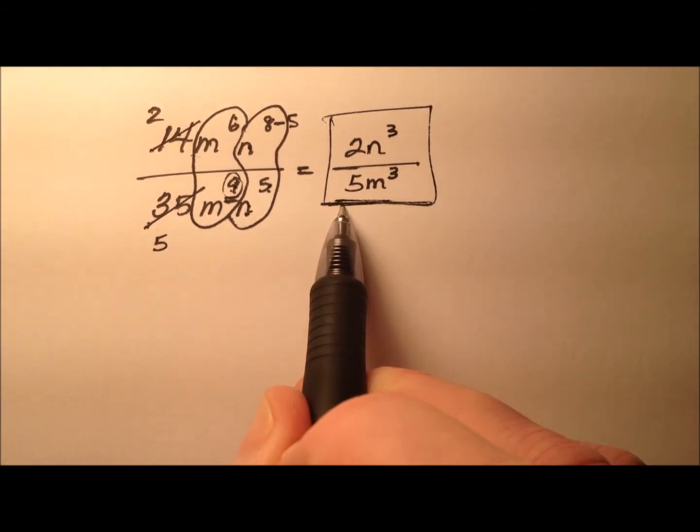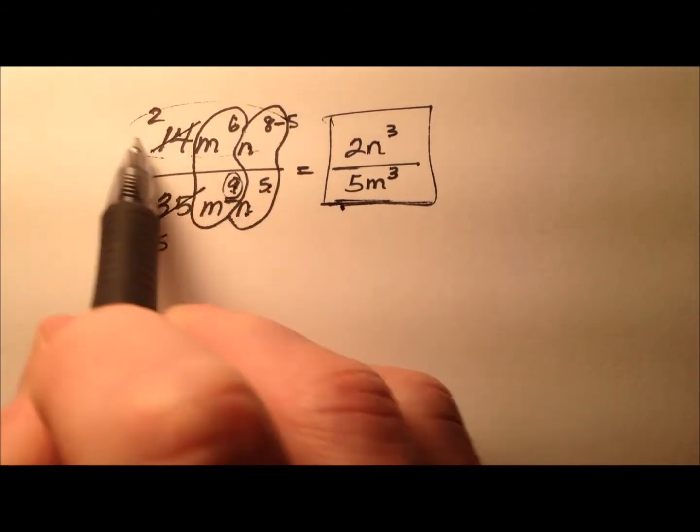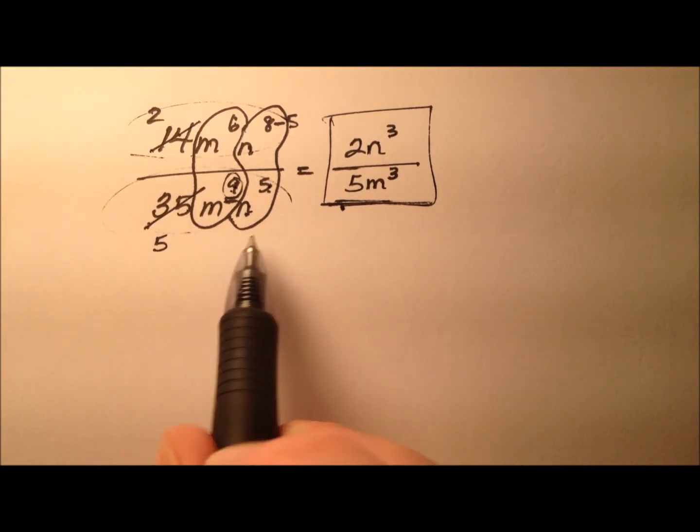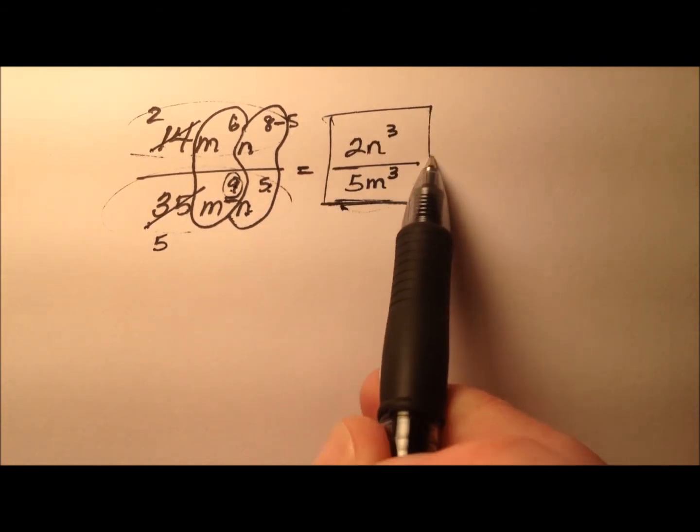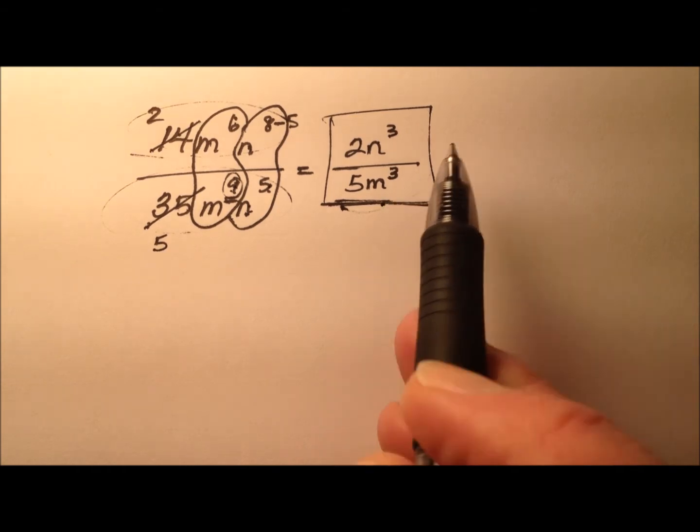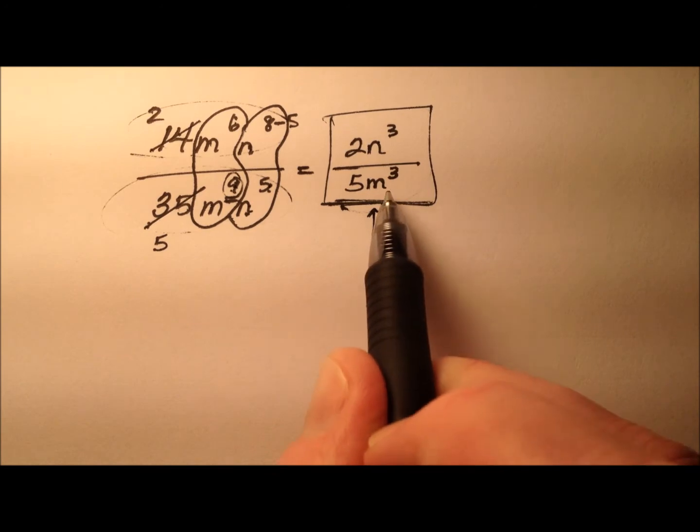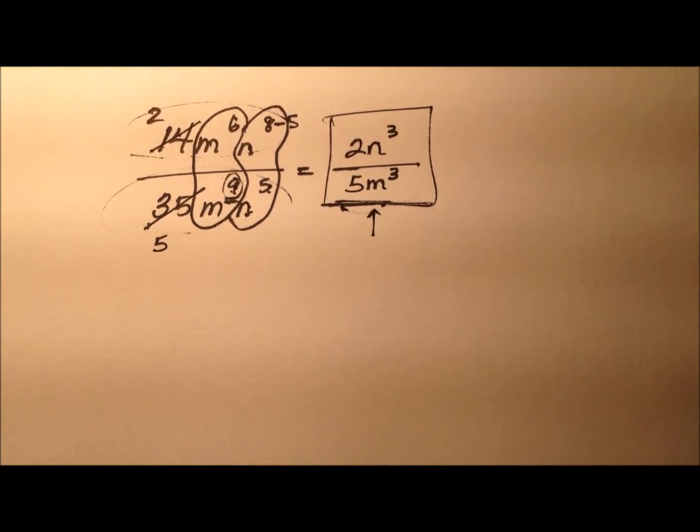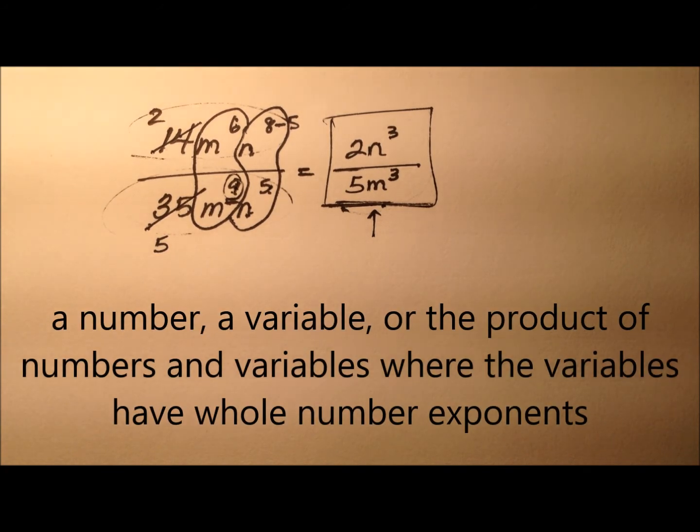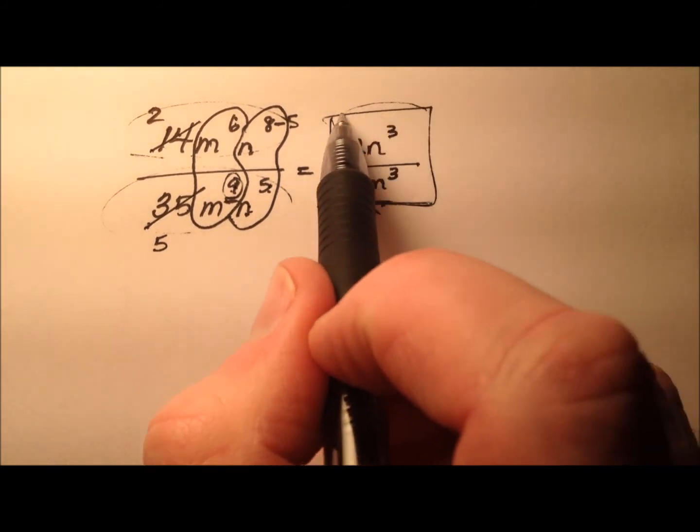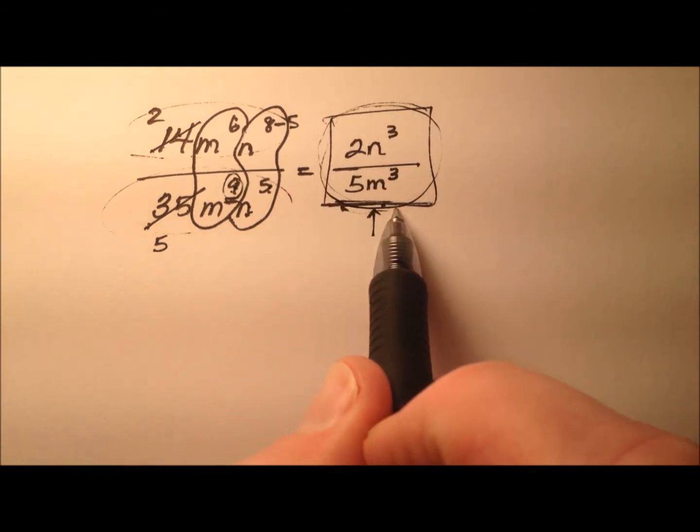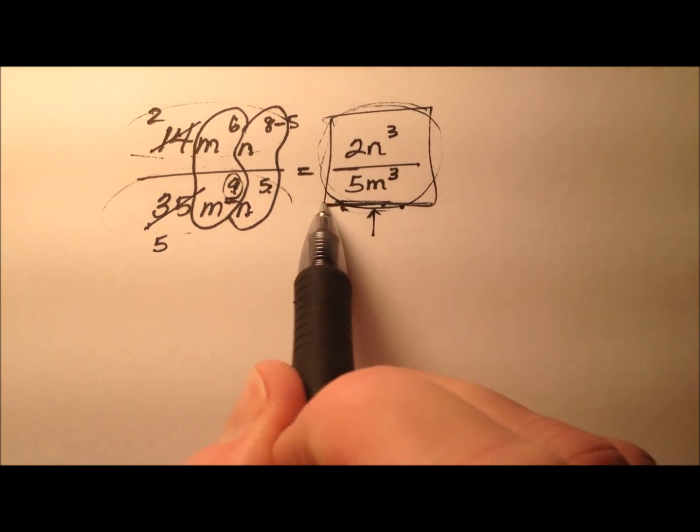We have this algebraic expression here that is the quotient of these two monomial expressions. But this quotient in and of itself is not a monomial because we cannot have the variable in the denominator because it represents division. The definition of a monomial is a number, a variable, or the product of numbers and variables where the variables have whole number exponents. This quotient does not meet the definition of a monomial.